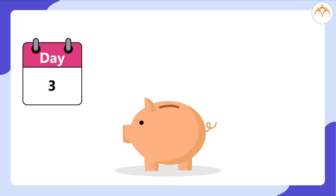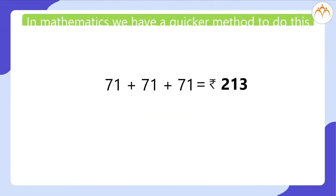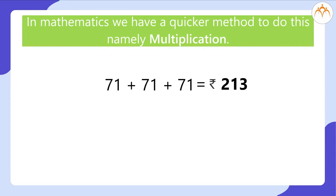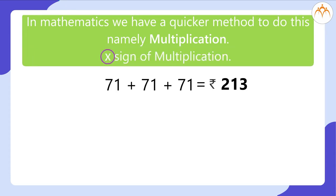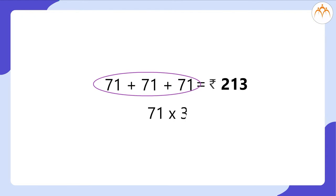Then after the third day, I will have 213 rupees, right? Here, 71 is repeatedly added three times. In mathematics, we have a quicker method to do this, namely multiplication. This sign is used for multiplication. So instead of adding 71 three times, I can multiply 71 by 3.